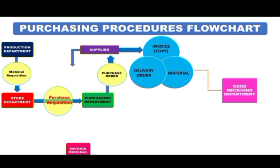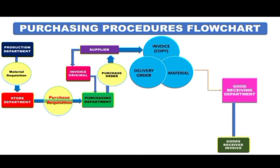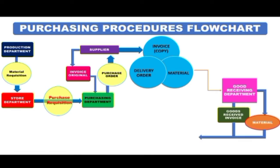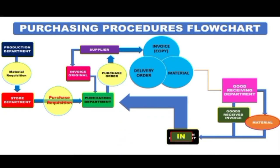The receipt of goods will be acknowledged by the receiving department by issuing a Goods Received Note, or GRN, together with the materials to the inspection department. Inspection of material is done by the inspection department for quantity, quality, and specification, and an inspection note, or IN, will be issued to the purchasing department.